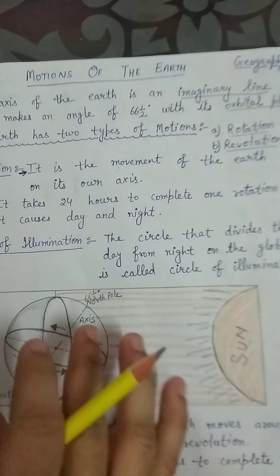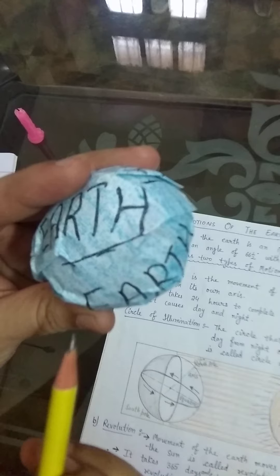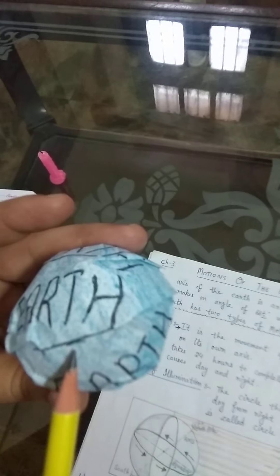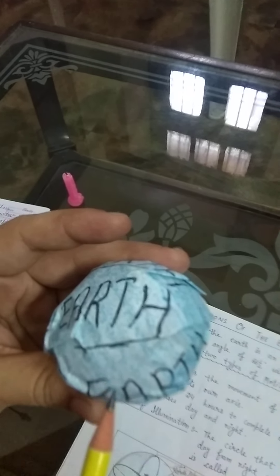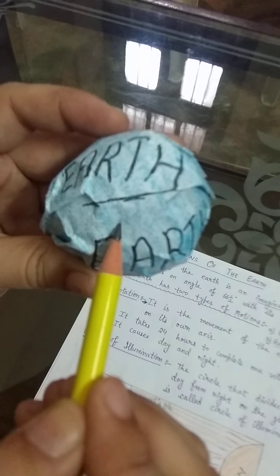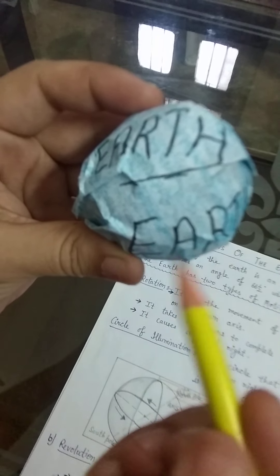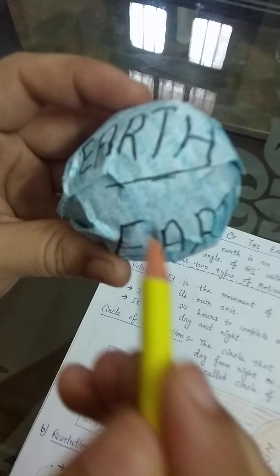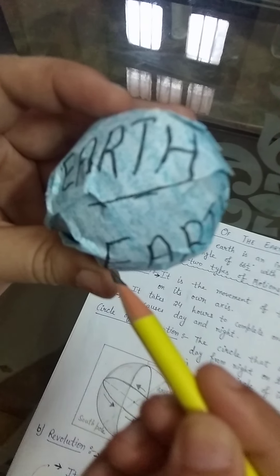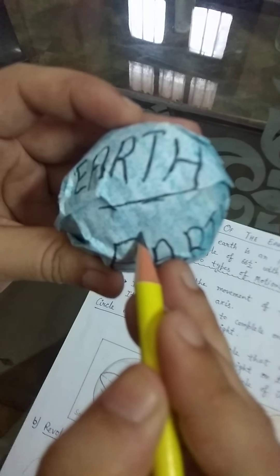Rotation. Look at the ball — this ball is in blue color. The ball is considered as the earth, and the earth is called a blue planet. Why is the earth called a blue planet? Because three-fourths of the earth is covered with water. That is why the earth is called a blue planet.